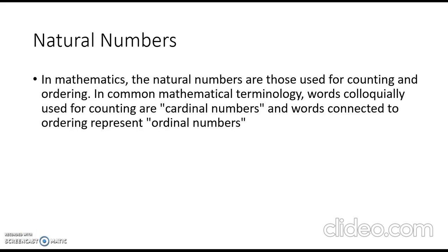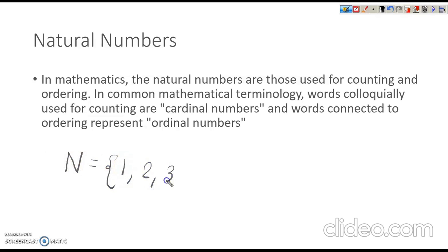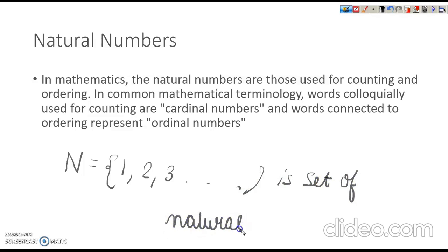First we will talk about natural numbers. What are natural numbers? All the counting numbers are represented by N. Natural number begins from 1 and we can represent it by N, so N = {1, 2, 3, ...}. It is the set of natural numbers.